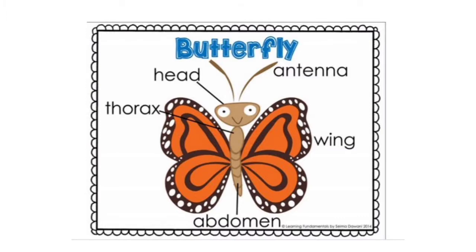Good morning K-1-1! Let's learn today about the butterfly body parts. Let's learn five body parts of the butterfly — at least five of them, five or more. Can you see here? There is the antenna, head, thorax, wings, and abdomen. Are you ready? Now let's look at the following images of the body parts one by one.